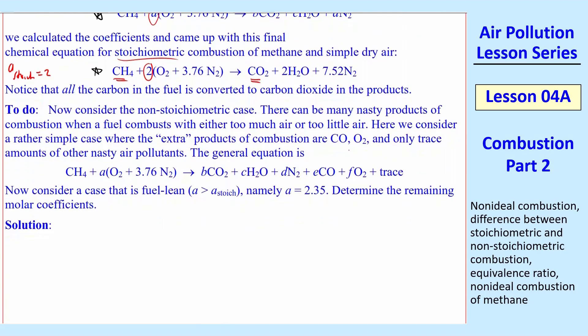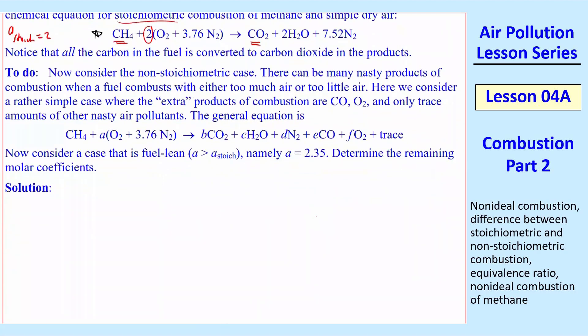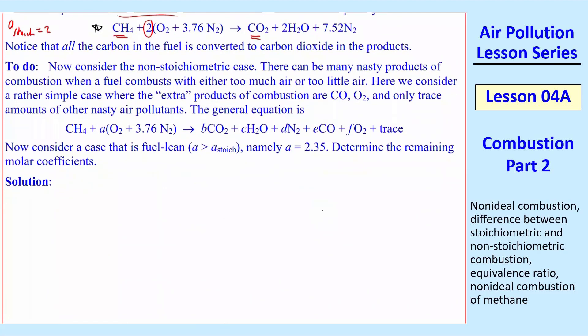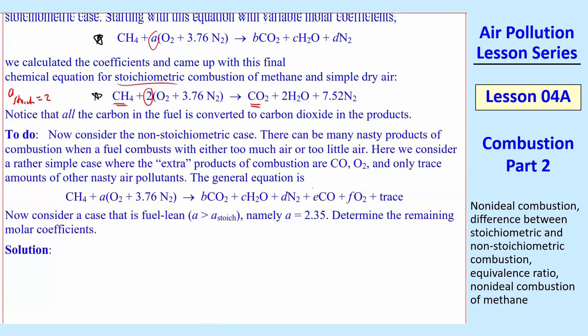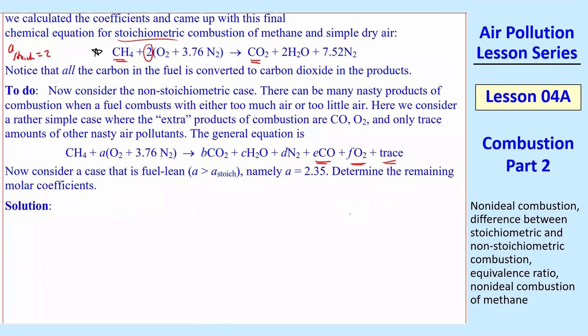So let's consider a non-stoichiometric case. And there's a lot of ways you can construct this. Lots of nasty combustion products. And you get these extra products of combustion like carbon monoxide, etc. And you can have some NOx and some other stuff. But let's suppose here we're doing a simple case. So we take the same equation that we had up here, except we add two more terms, three actually, E and molar coefficient E times carbon monoxide. This is going to be an excess oxygen case. And so some of the oxygen will just pass through and not interact with anything. And then some other trace stuff that we're not going to worry about.